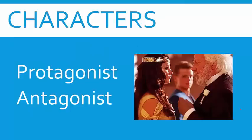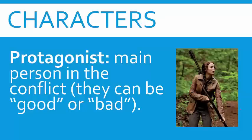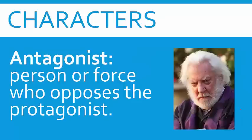Oftentimes you'll see a protagonist and an antagonist. I'm going to use the Hunger Games as an example with Katniss Everdeen as well as President Snow. The protagonist is the main person in the conflict, and they can either be good or bad — they just have to be the main person in the conflict. The antagonist is the person or force who opposes the protagonist. In the Hunger Games, Katniss is the quite good protagonist, and President Snow is the not-so-good antagonist.